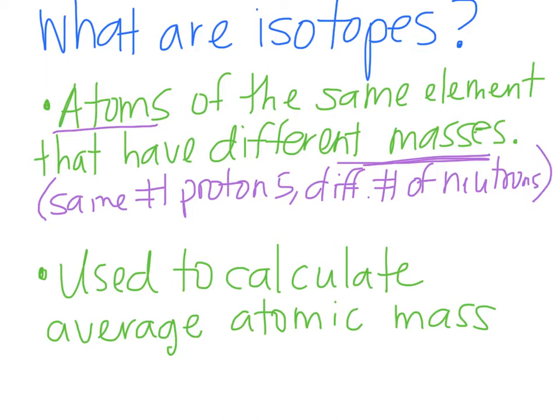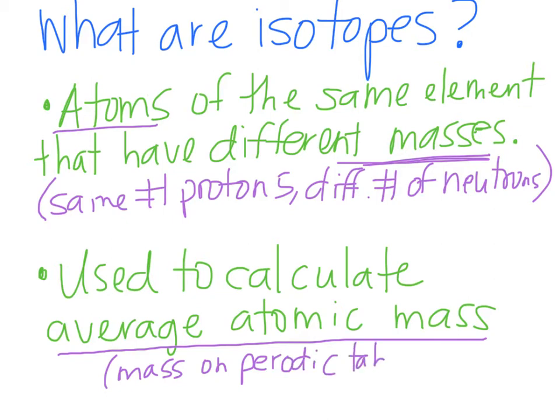So isotopes are actually naturally occurring. You can easily take or give a neutron to an atom. A very important thing about isotopes is they are used to calculate what's called the average atomic mass. This is the mass that you see on the periodic table for every single element. We're going to talk about how you calculate that using an example.